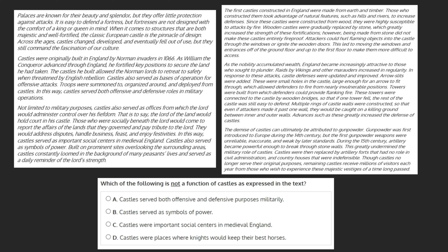Which of the following is not a function of castles as expressed in the text? A: castles served both offensive and defensive purposes militarily. B: castles served as symbols of power. C: castles were important social centres in medieval England. Or D: castles were places where knights would keep their best horses. If we can go through the text and find proof supporting these functions of castles, we can know that they are incorrect, as our question is asking which is NOT a function.